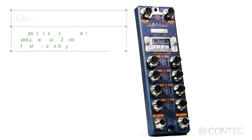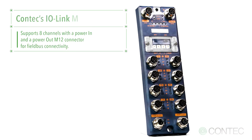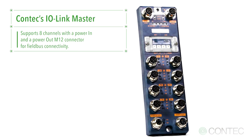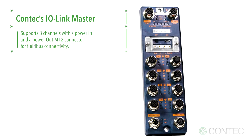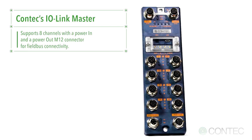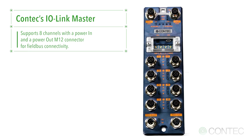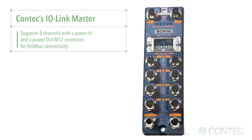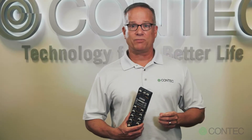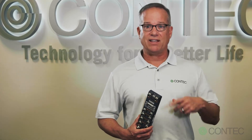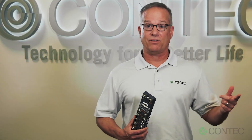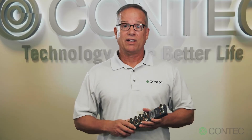Contact's IO-Link Master supports eight channels with a power in and power out M12 connector for field bus connectivity. This will allow multiple units to be daisy-chained together. You don't need to have separate power supplies for each module.